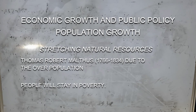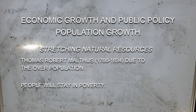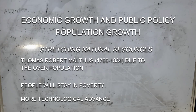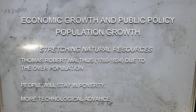But world population has increased over the past two centuries, and at the same time, living standards around the world are much higher. Where did Malthus go wrong? He did not take into consideration technological advances — pesticides, fertilizers, and mechanized farm equipment — that Malthus never imagined would allow each farmer to feed a far greater number of people. So even with more mouths to feed, fewer farmers are necessary because each farmer is much more productive.